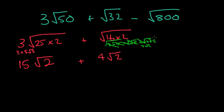Likewise, this one, you could see that if I need to have 2 in it, so you can do 2 times 400, and then you might realize that 400 is 20 times 20, so that's minus 20 root 2.